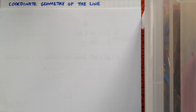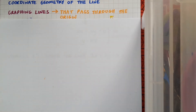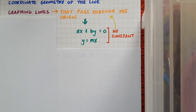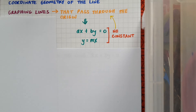In this video on coordinate geometry of the line, we'll be graphing lines, particularly lines that pass through the origin. Lines of this type look like this: ax plus by equals zero, or y equals mx. Notice that in both cases there's no constant in the equation, which gives a big hint that this type of line passes through the origin.